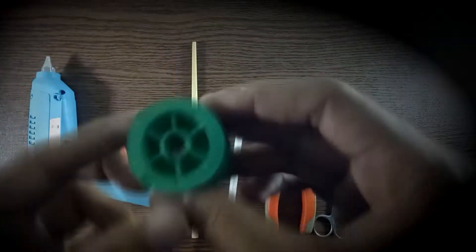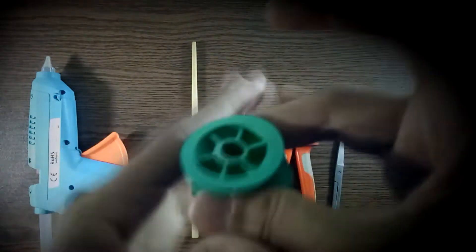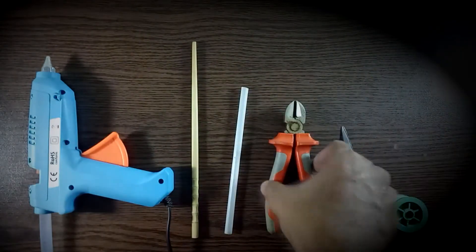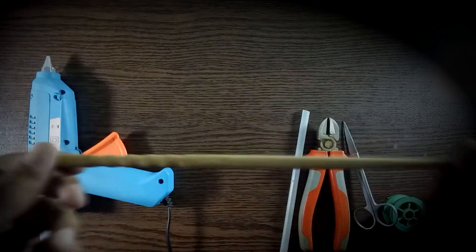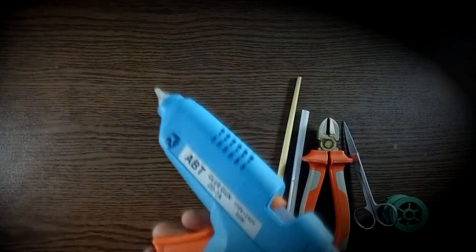First of all, I am using rubber ring, usually used to hang the ceiling fan, scissor, plier, straw, chopstick, and silicon glue.